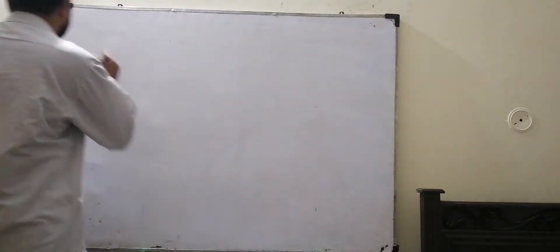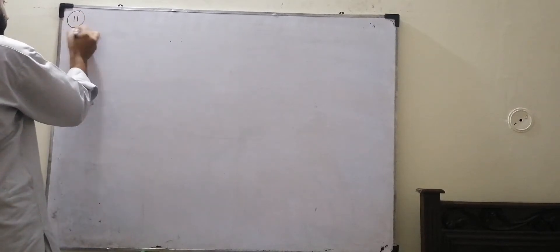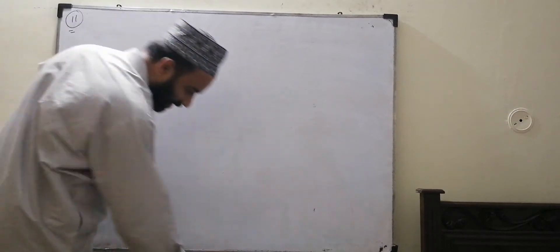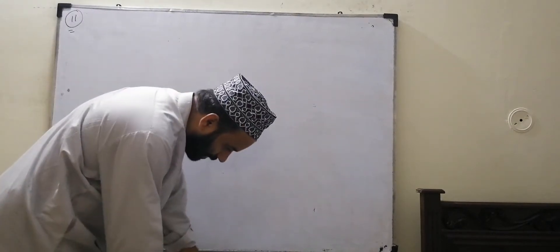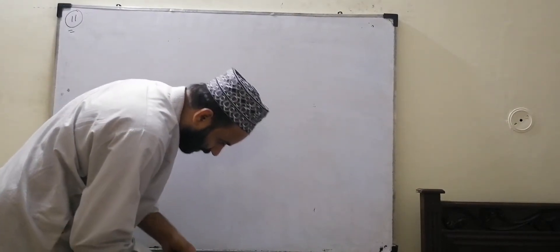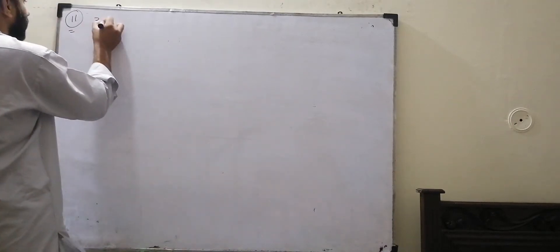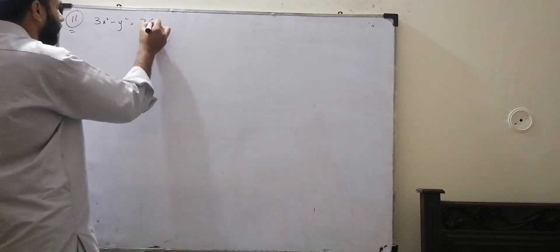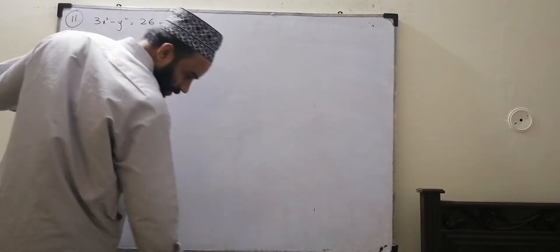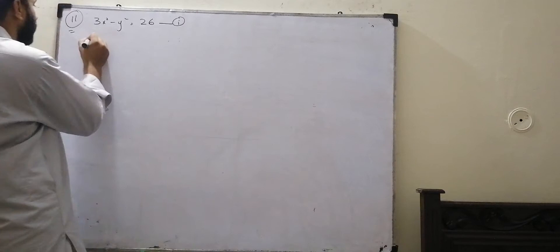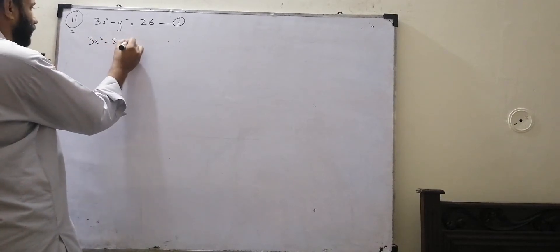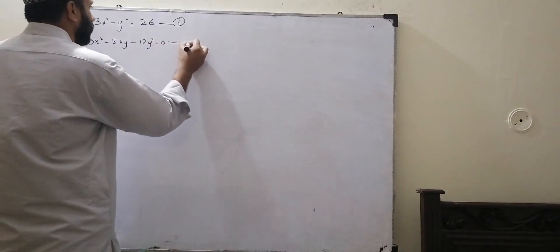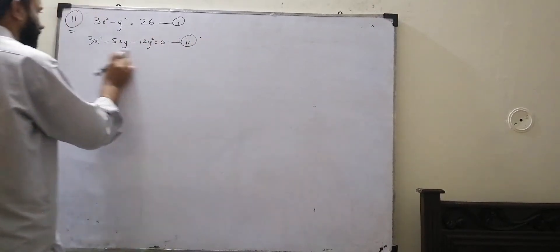Question number 11. The first equation is 3x squared minus y squared is equal to 36. The second part is 3x squared minus 5xy minus 12y squared is equal to zero. I will factorize the second equation because it is equal to zero.